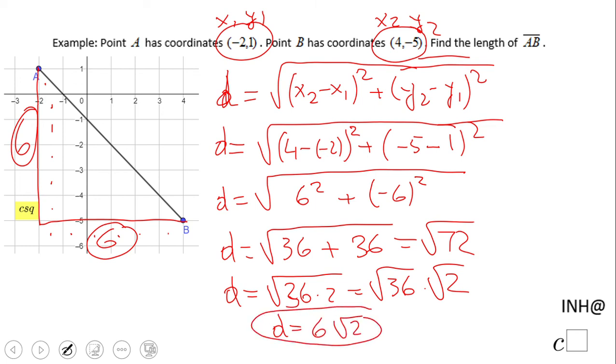Like I said, if you use the Pythagorean theorem, you should get the same answer. This is the distance between points A and B. If you enjoyed the video, don't forget to click the like button and come back to C Squared for more help. Thank you.